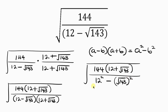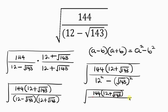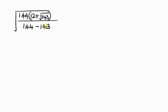Simplifying further, this results in 144 times 12 plus the square root of 143, all over 12 squared which is 144, minus the square root of 143 squared. Notice that the square cancels the square root, leaving behind 143.